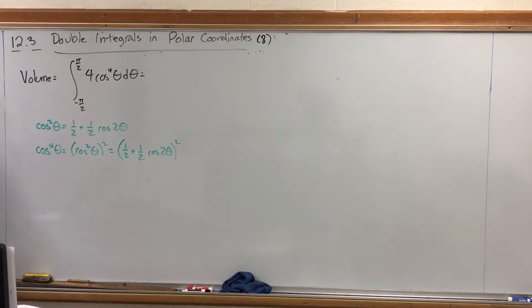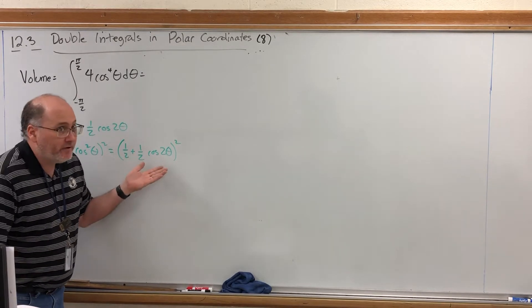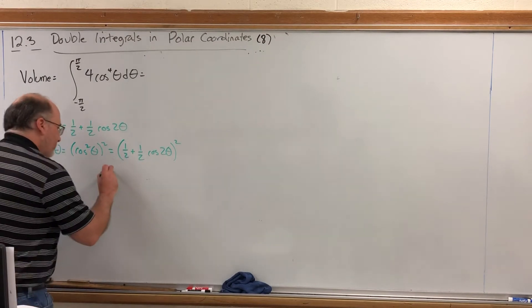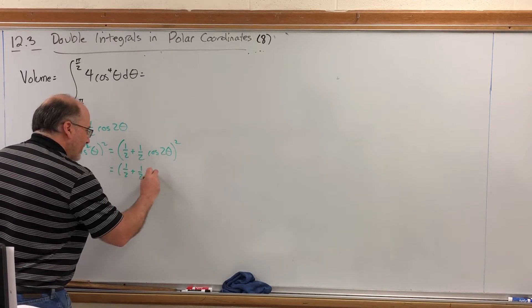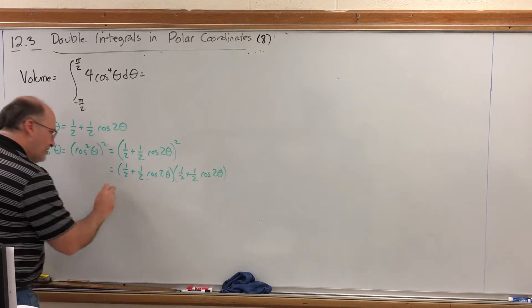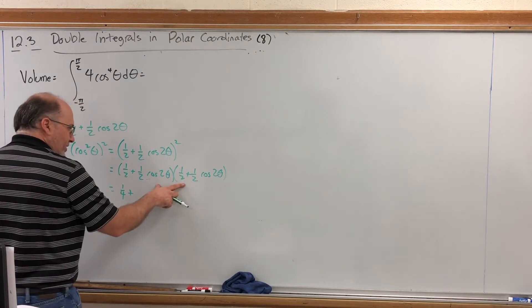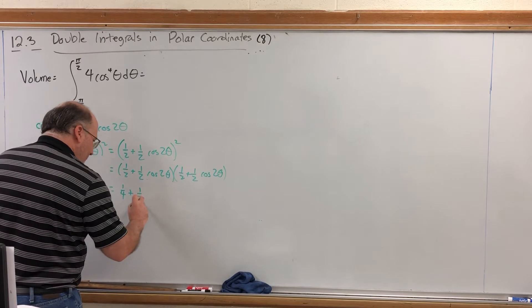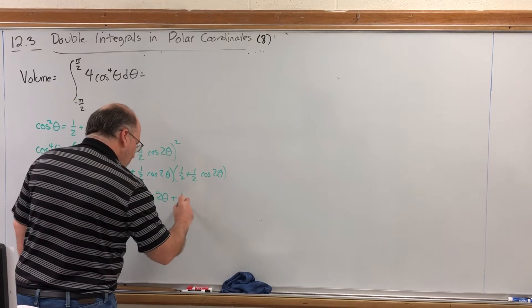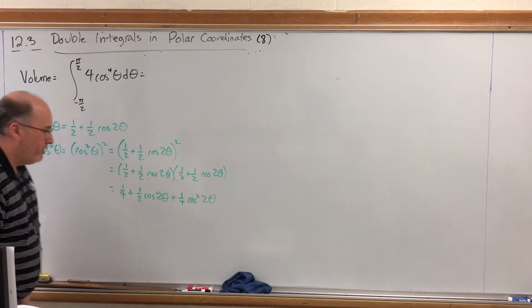We're not out of the woods yet because if we try to integrate this we can't do a substitution. Try it, you'll fail. There's not enough stuff to make du and so our only other recourse is to foil this out. If we square this binomial we're going to get another cosine squared and have to deal with it. If we square this binomial we'll get one-fourth plus one-fourth cosine theta plus another one-fourth cosine theta so one-half cosine two theta and then the last part would be one-fourth cosine squared two theta.